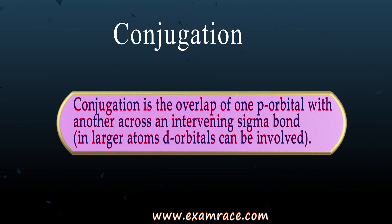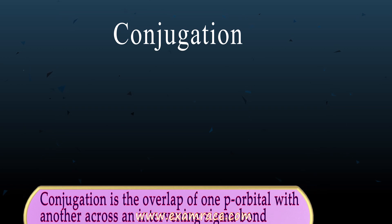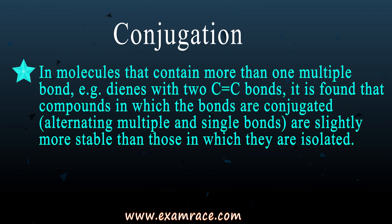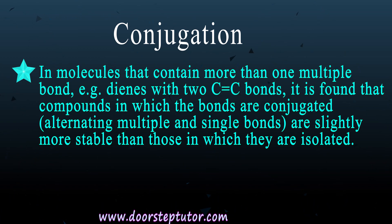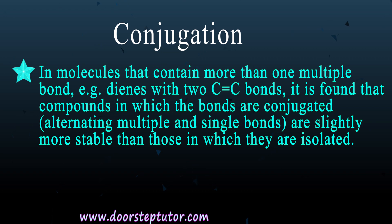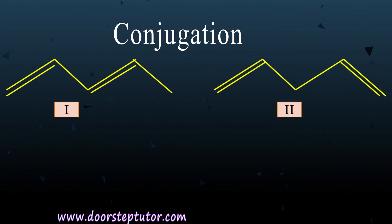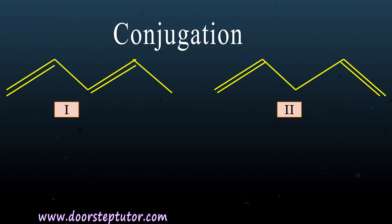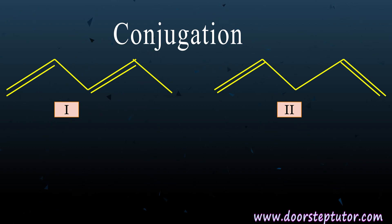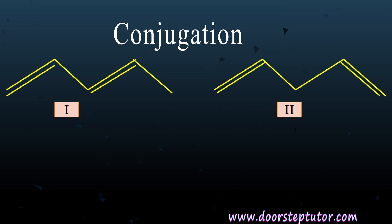For larger atoms, d orbitals can also be involved. In molecules containing more than one multiple bond — for example, dienes with two carbon-carbon double bonds — compounds in which the bonds are conjugated are slightly more stable than those with isolated bonds. The first structure shows a double bond, then a sigma bond, then a double bond, meaning the bonds are in alternating positions — this is conjugation.